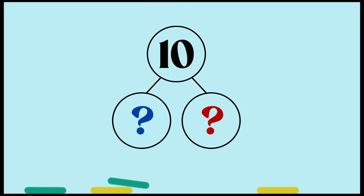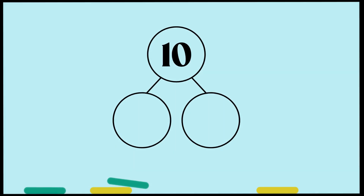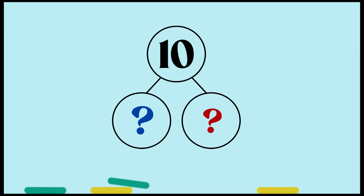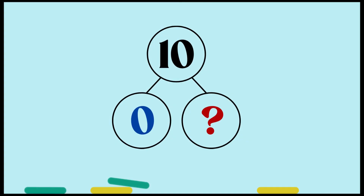Now let's make 10 with number bonds. A number bond shows two numbers that join together to make another number — today that number is 10. Two number friends make 10 altogether. I will give you one number and you will have to guess the other one which makes 10. So this one has zero blue dots — how many red dots will there be to make 10? Yes, there are ten red dots, because zero has no value.